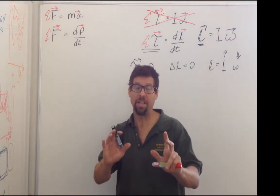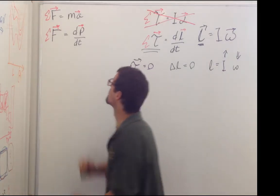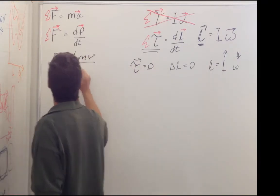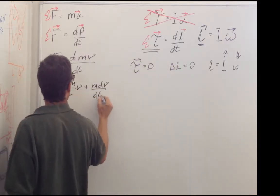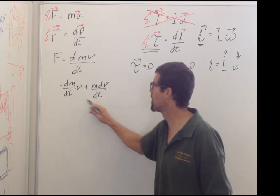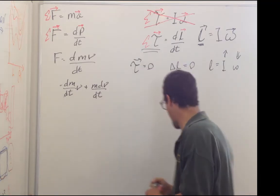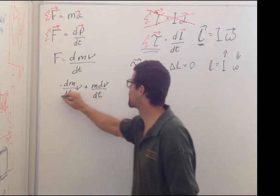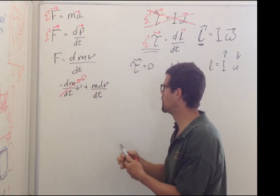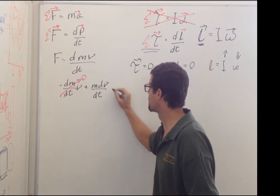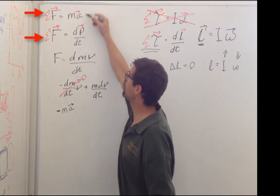If you're interested in the math, you can see this. Because momentum is mass times velocity. Using the chain rule, I have two terms. But the rate of change of mass is zero. And so this term drops. And dv dt is equal to acceleration. So these two equations are identical.